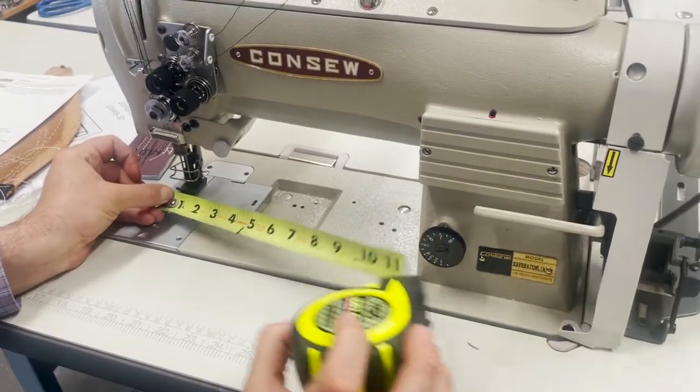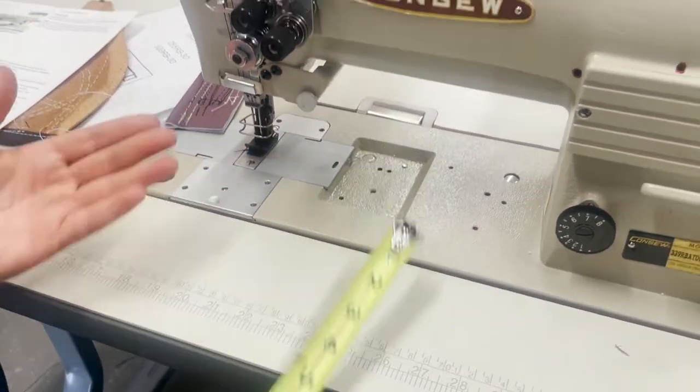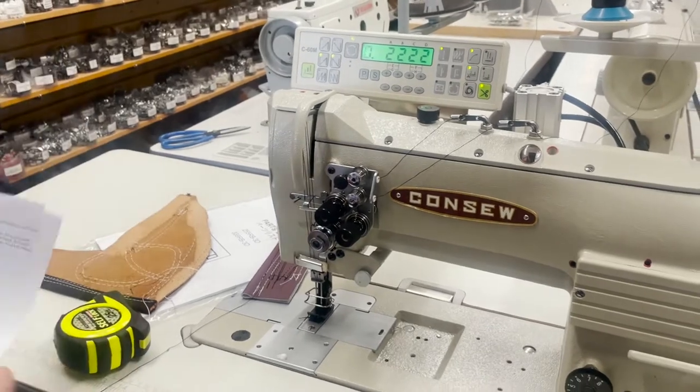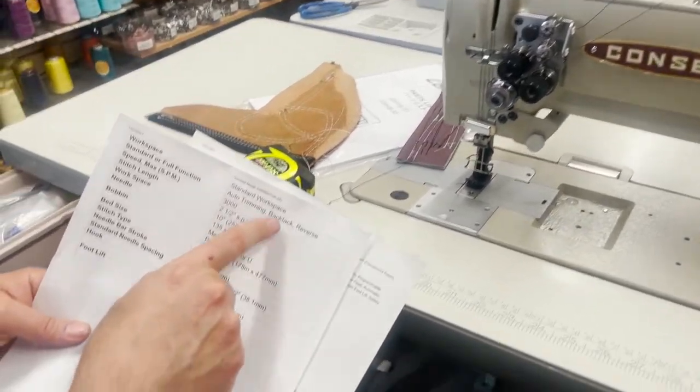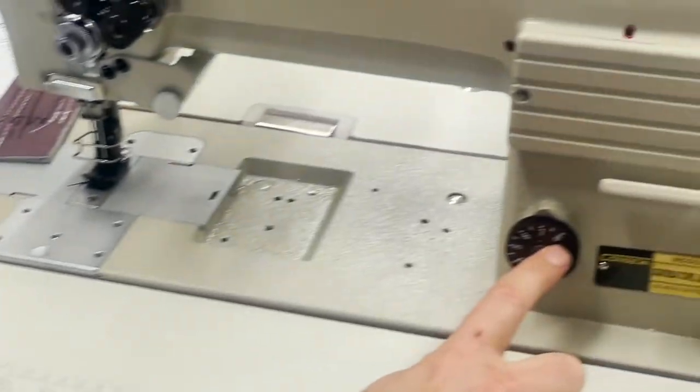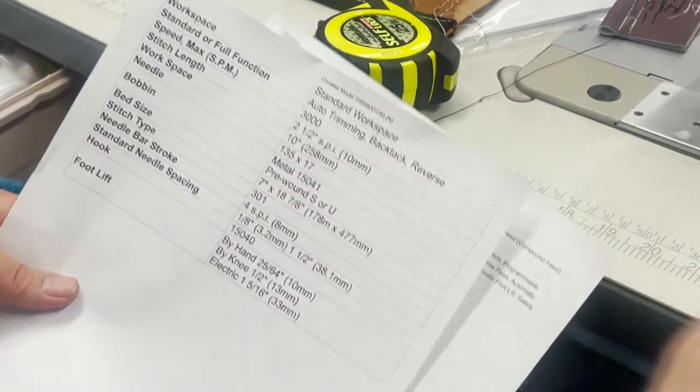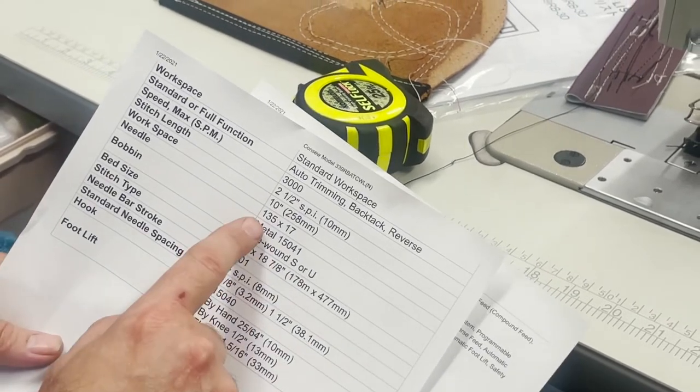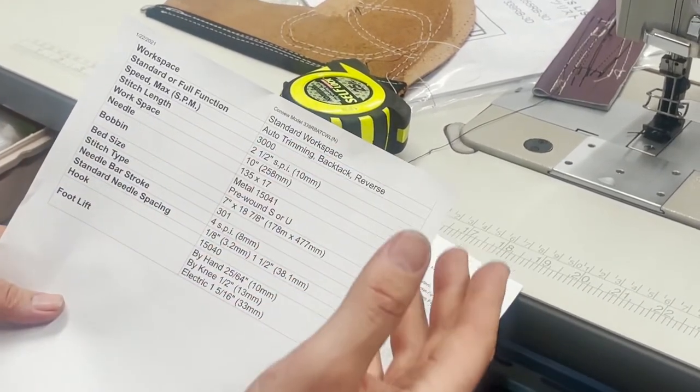From needle to the neck is 10. This way the bed is 7 inches. Double needle walking foot, 135 by 17 needle. I'm going to go over what Consew tells us. Obviously auto trimming, bar tack, reverse, maximum speed 3000. Stitch length is right here from 1 all the way to 8. That means 2.5, it said 10 millimeters here, I said 8 millimeters here, but they say it goes 2.5. Workspace 10 inches, that's what we talked about.